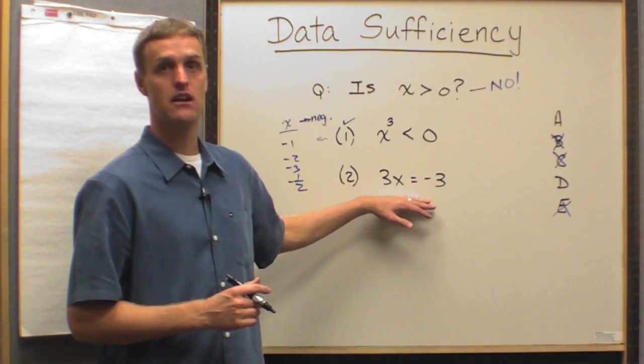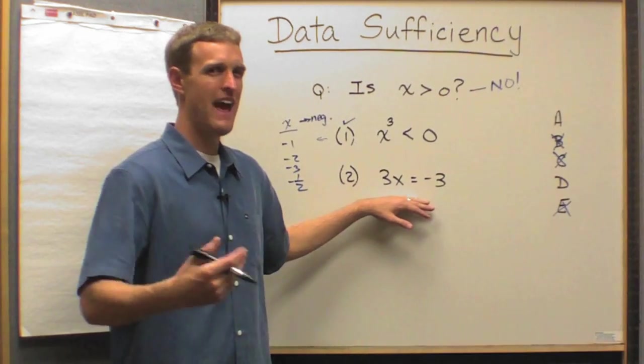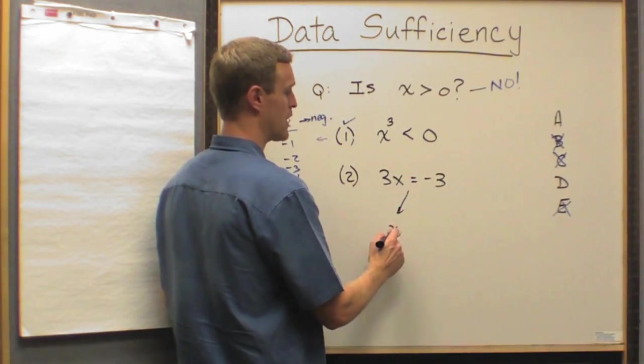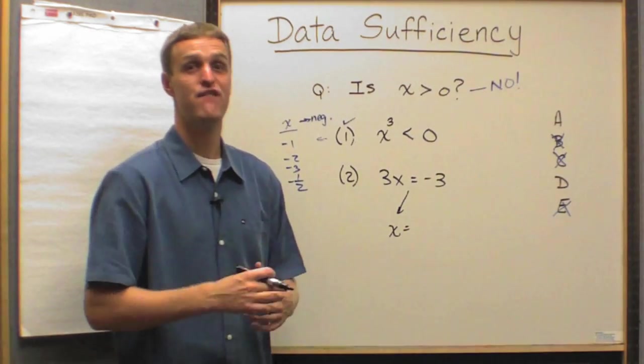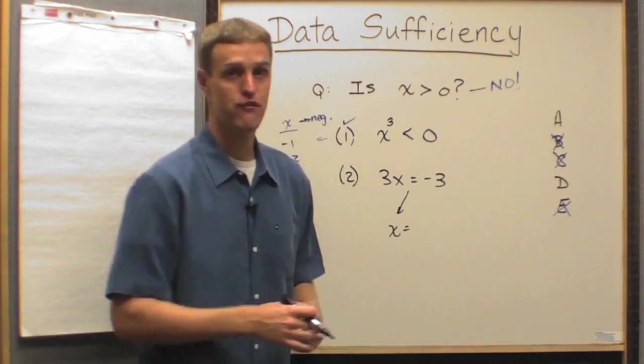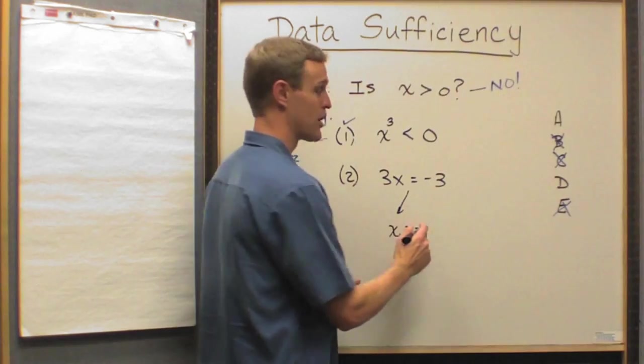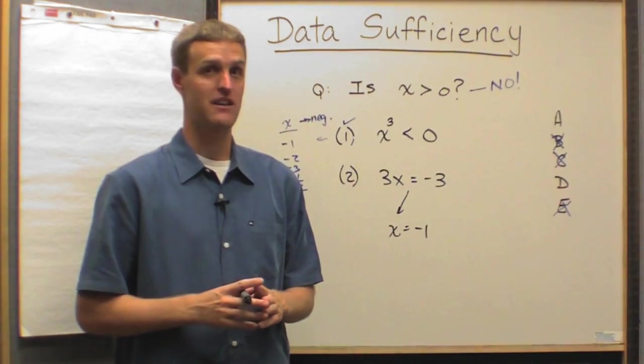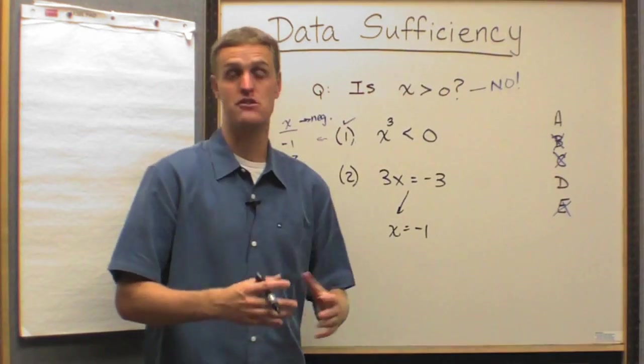That's essentially what they've done here, haven't they? I mean, I said we don't actually need to solve for x, but the bottom line is we all know, just looking at that, that we could solve for x definitively. And if you go too far and actually do it, I encourage you not to. I encourage you just to realize, hey, one equation, one variable, I could solve for x. And once I know x, I could answer the question.